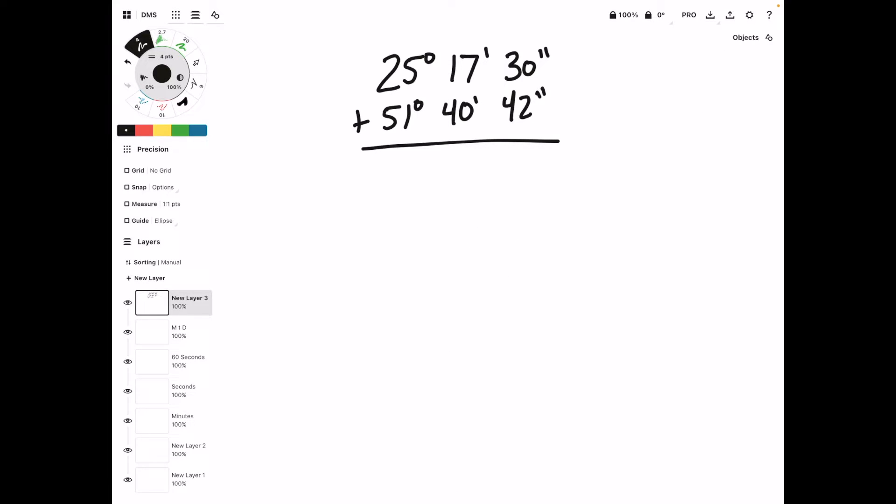Let's work through another one of these addition problems quickly. So again, we're going to start with the seconds column and we're going to add it up. This time, we get 72 seconds. Then we can slide over to the minutes column, and here we'll get 57 minutes. And then finally, looking at the degrees column, we'll get 76 degrees.